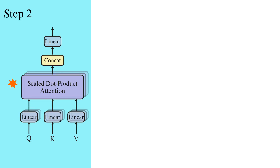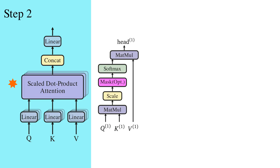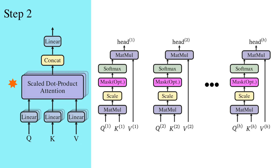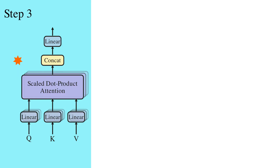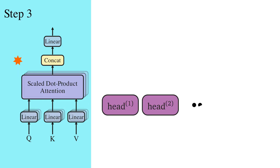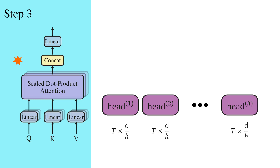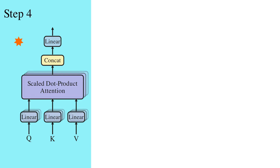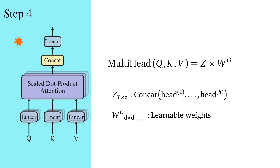In the second step, we perform a scaled dot product attention on each triple set of Qi, Ki, and Vi, naming each output the context matrix head_i. Performing SDP on all sets from 1 to h gives us head_1 to head_h. Each head has dimensionality T by d/h. In step 3 we concatenate these heads together to get matrix Z_T with dimensionality T by d. Finally, we perform a matrix multiplication between matrix Z and the learnable weight matrix W_O, resulting in the context output for the multi-head attention layer.